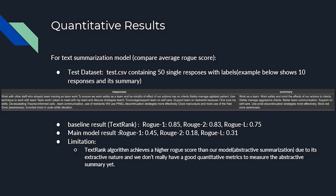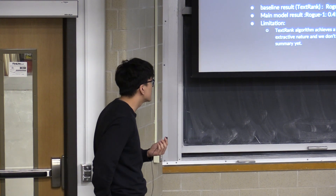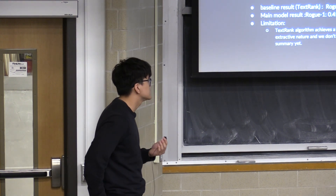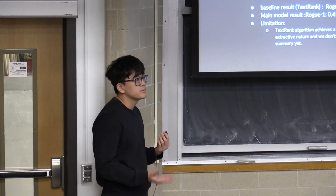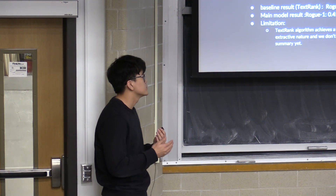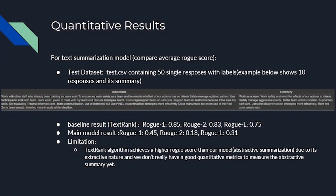Now we talk about quantitative results of our models. For the summarization models, we compare the average ROUGE scores. We use a test set containing 50 single responses with their corresponding hand-labeled summaries. The baseline achieves a higher ROUGE score because our baseline is an extractive model, and ROUGE scores compare the overlap between the input and the targets. We haven't found a good way to measure the abstractive summarization task.